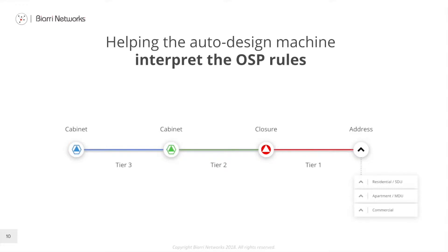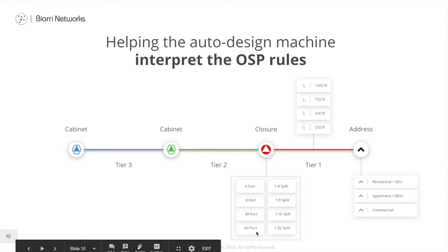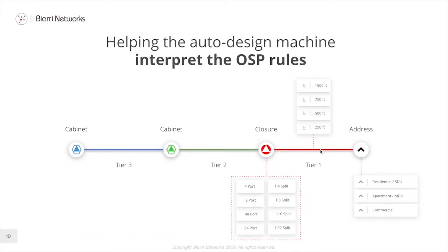The Tier 1 cable is often referred to as the drop, and it runs from the Tier 1 closure to the Tier 1 hub. We have two rules for this tier: the number of ports on the Tier 1 hub and the length. The port rules and length of the cable from the Tier 1 closure to the address can be specified — these are example rules and example lengths, but we can include any length we need.